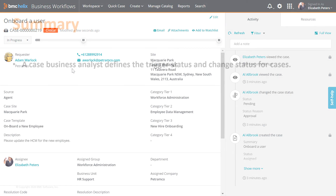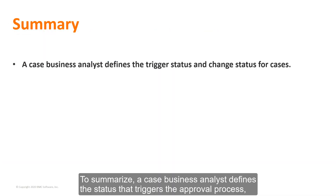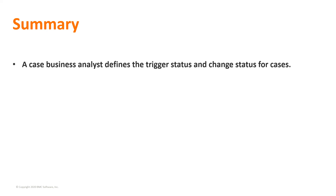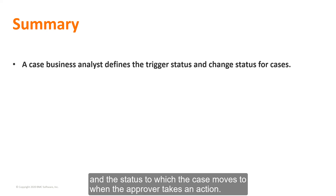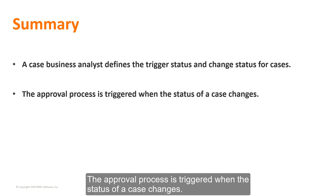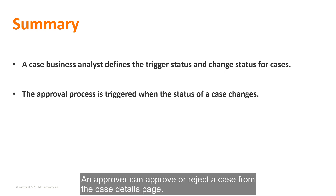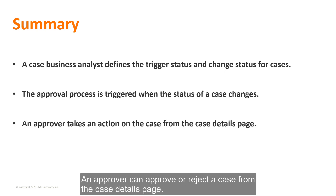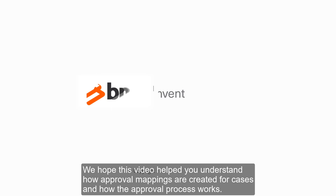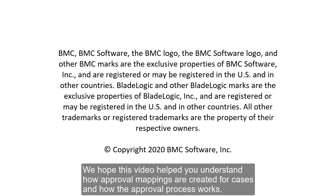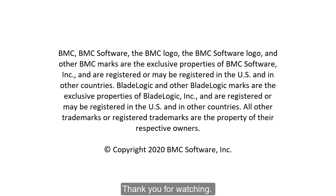To summarize, a case business analyst defines the status that triggers the approval process and the status to which the case moves when the approver takes an action. The approval process is triggered when the status of a case changes. An approver can approve or reject a case from the case details page. We hope this video helped you understand how approval mappings are created for cases and how the approval process works. Thank you for watching.